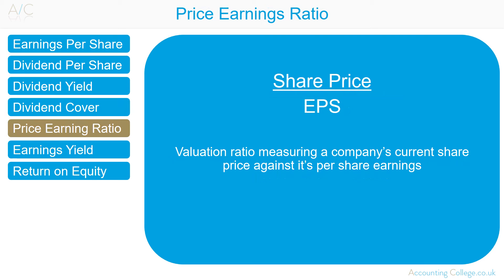Price Earnings Ratio is share price divided by earnings per share. It is a valuation ratio measuring the company's current share price against its per-share earnings, and indicates how many years it takes for the company to earn back the share price shareholders paid. Price Earnings Ratio can be compared to the industry average: an above-average P/E ratio indicates that investors expect growth, while a below-average P/E ratio indicates investors expect the organisation to shrink.